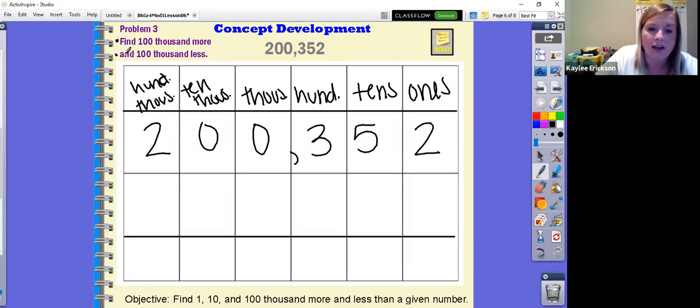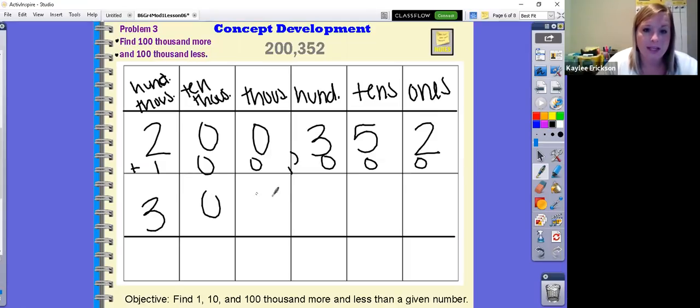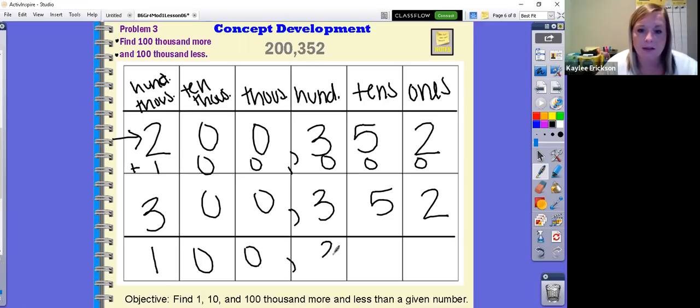So same thing here. It says find 100,000 more, find 100,000 less. So 100,000 more doesn't mean I come and I add 100 in this one little column because I can't, but if I add 100,000, since I'm in the 100,000 column, it's as simple as two plus one. So three, everything else is going to stay the same. Then you'll do the same thing when you want 100,000 less than our original number. So one less than two is one. So then I have 100,352. Putting these in your place value charts makes it really, really simple for you to see 100,000, 10,000 and 1,000 greater or less than a single number.